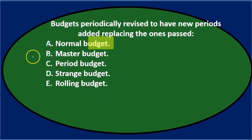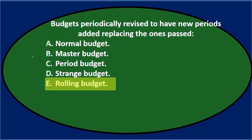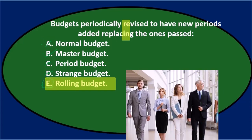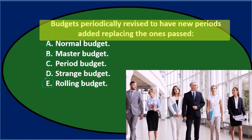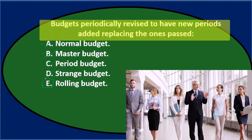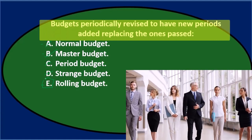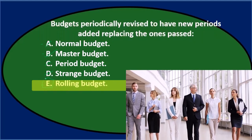The normal budget is going to be a static, yearly budget that you break down into quarters and possibly months. The rolling budget is the one where you're always looking out into the future — you always have that time period, the headlights are always basically a year out into the future, because you keep rolling forward. Final answer: budgets periodically revised to have new periods added, replacing the ones past — E) rolling budget.